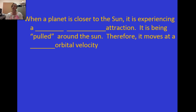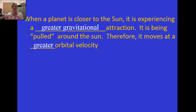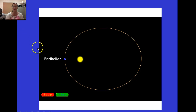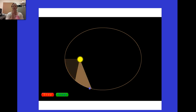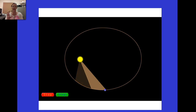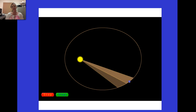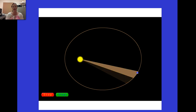When a planet is closer to the sun, it experiences a greater gravitational attraction and is literally pulled around the sun, so it moves at a greater orbital velocity. Now let's look at a short animation. Watch the planet — as it moves from one spot to the next, it casts a triangular section or area, and due to Kepler's second law, that area is equal all around the orbit.